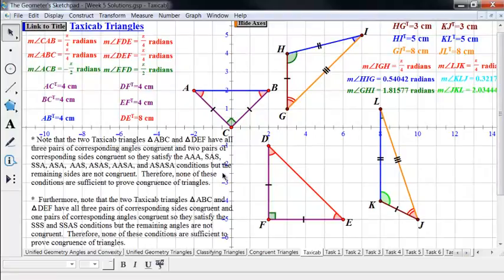Now if we look at this other pair of triangles, G H I and J K L in that order. Then they correspond where G corresponds to J, H corresponds to K, and I corresponds to L.